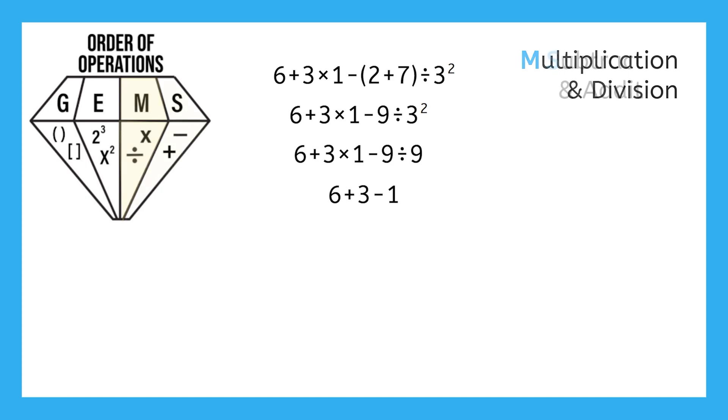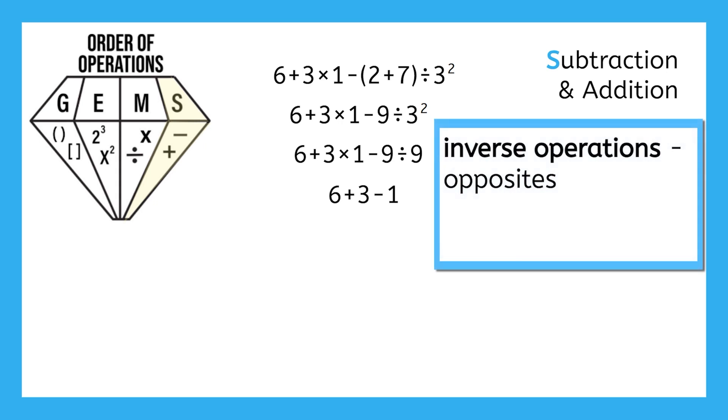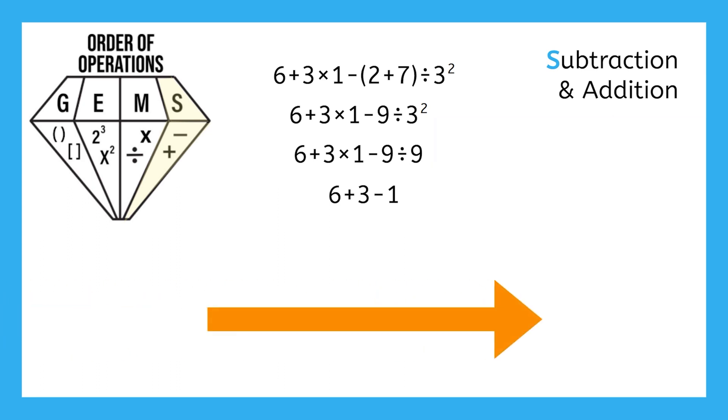Like multiplication and division, subtraction and addition are inverse operations. For example, five plus four equals nine. And nine minus four equals five. Opposites. Subtraction and addition are ranked equally in GEMS, so like before, we work from left to right and solve whichever comes first. Starting with six plus three equals nine. And then nine minus one gives us eight.